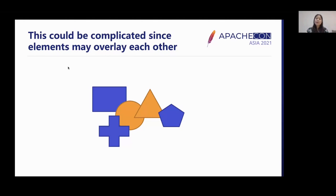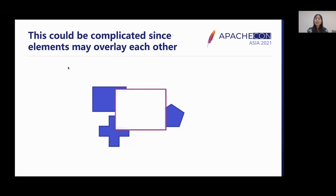But rendering modified elements only is not as easy as it seems. Canvas contains pixel information only, meaning you cannot clear modified elements individually, but only a certain rectangular area. So we could calculate the bounding box of the modified shapes and repaint those areas. But we still need to repaint other shapes that intersect with the bounding box, as they have been partly cleared as well.